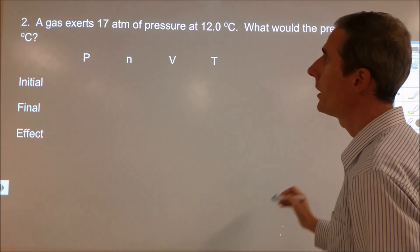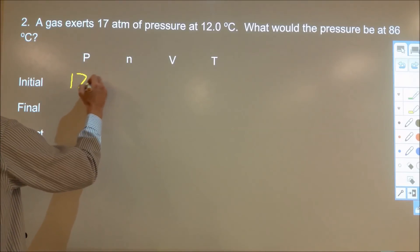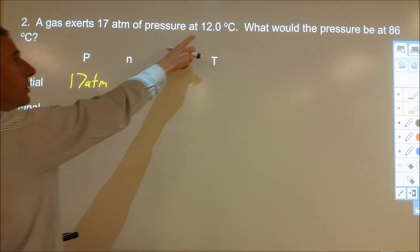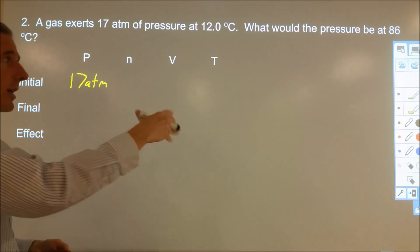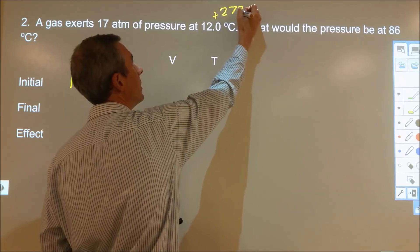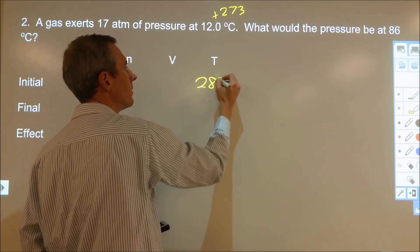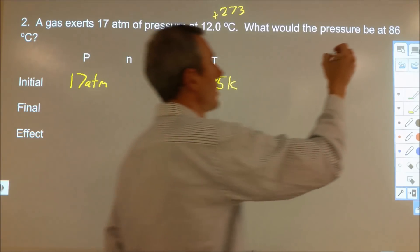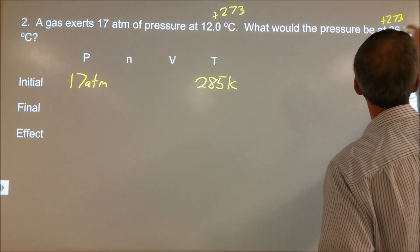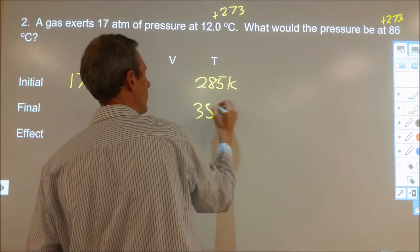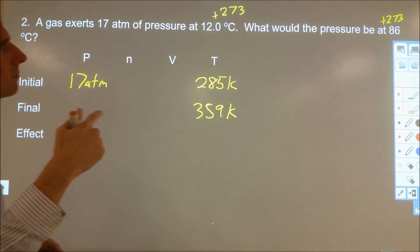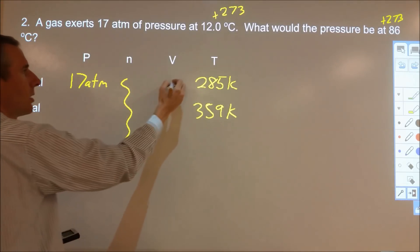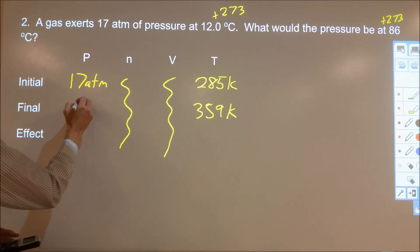A gas exerts 17 atmospheres of pressure at 12 degrees Celsius. What would the pressure be at 86 degrees Celsius? We can't use temperature in degrees Celsius — it has to be in Kelvins. Adding 273, we get 285 Kelvins for the initial temperature. Adding 273 to 86 degrees Celsius gives 359 Kelvins for the final temperature. The amount of gas and volume are assumed constant, and we want to know what the final pressure will be.